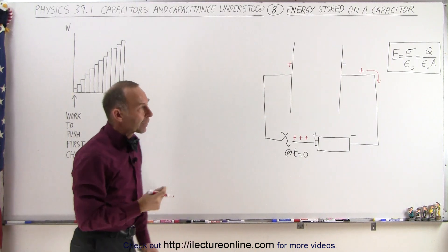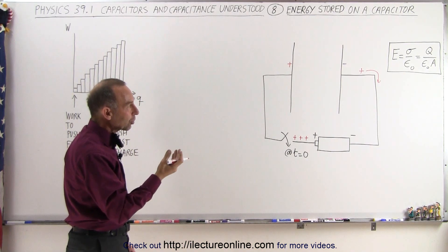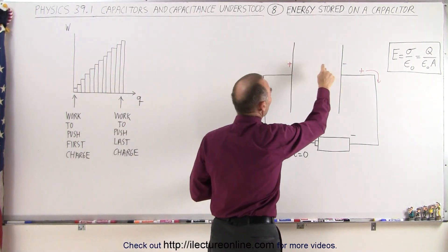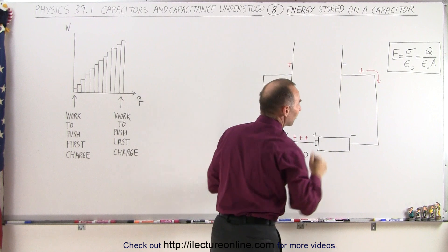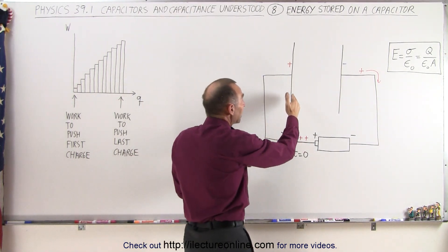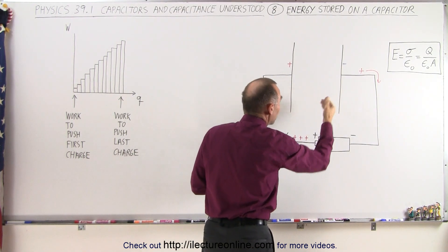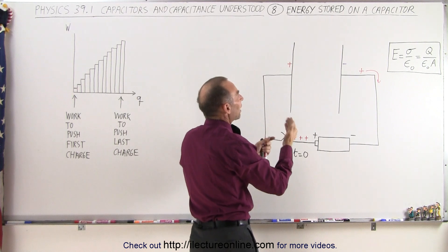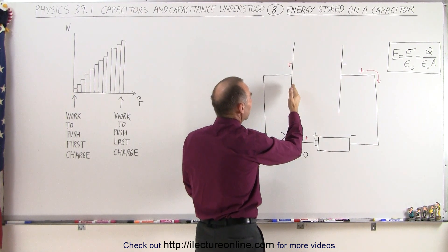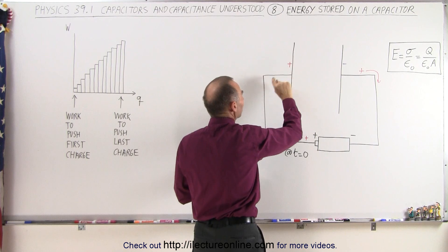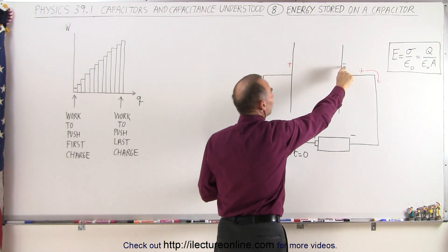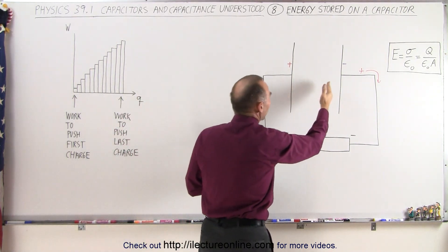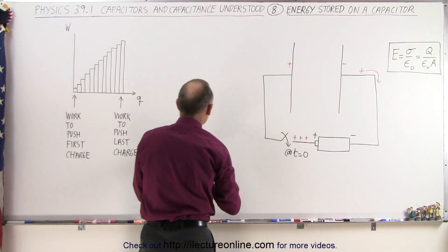So how much work did that take? The amount of work is going to be equal to the force times the distance to move a charge across the gap of the plates. So even though we're not physically moving any charges across from one plate to another, the amount of work it took to put the first charge on there is equal to the amount of work it would take to bring a charge all the way from one plate to the other. The reason is that the effect of pushing a charge on here caused this charge to be pushed away — it has the same effect as if you're moving a charge across the gap.